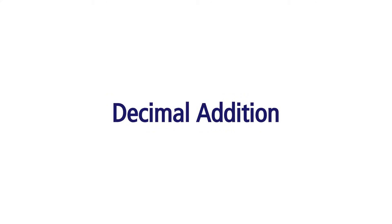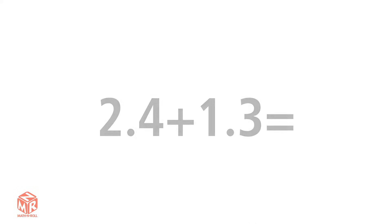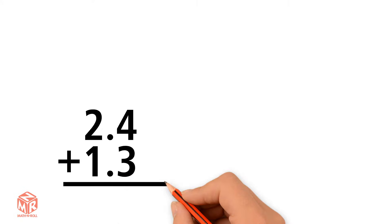Decimal addition. How do we add two decimals? We add decimals in the same way that we would add whole numbers. The only difference is that we have a decimal point. When adding decimals, remember to line up the decimal points on top of each other.